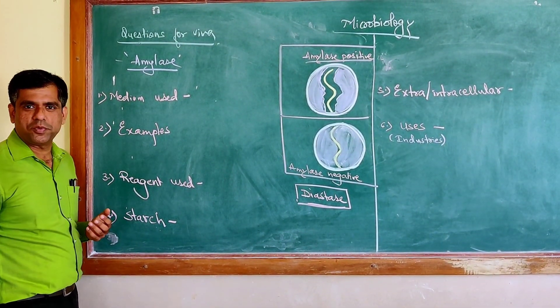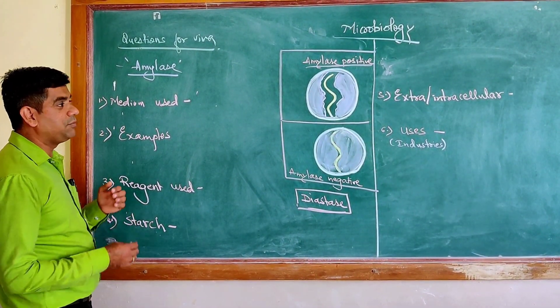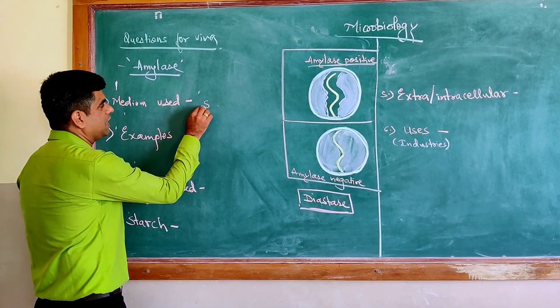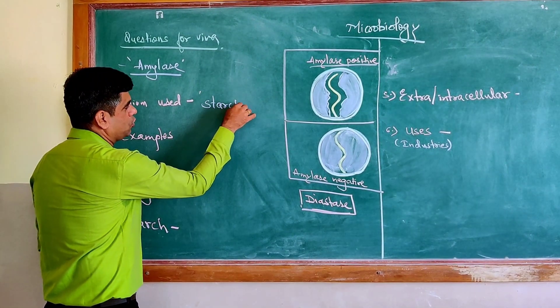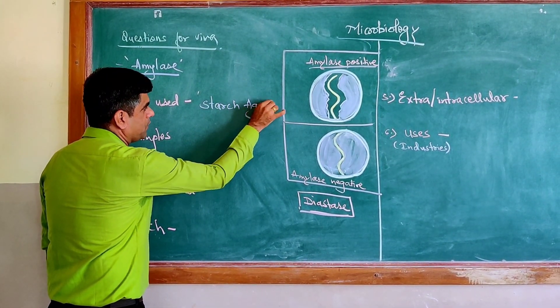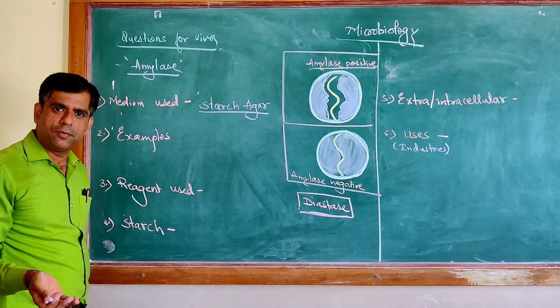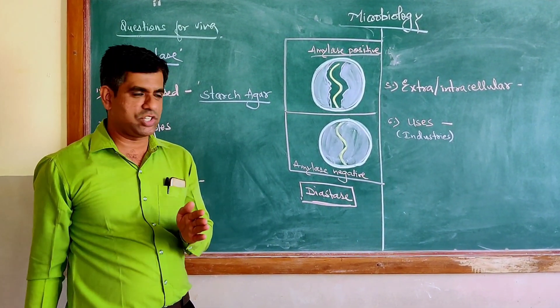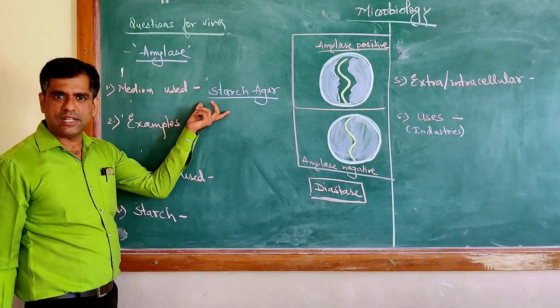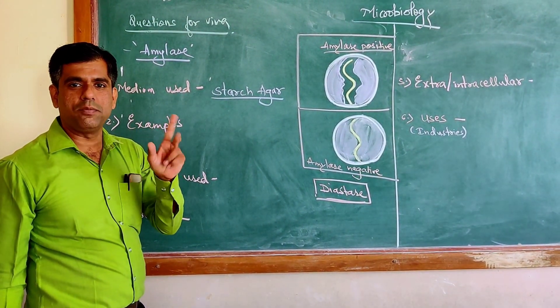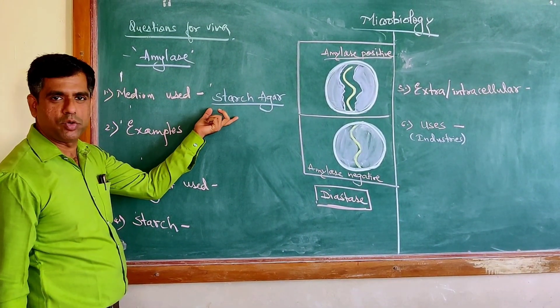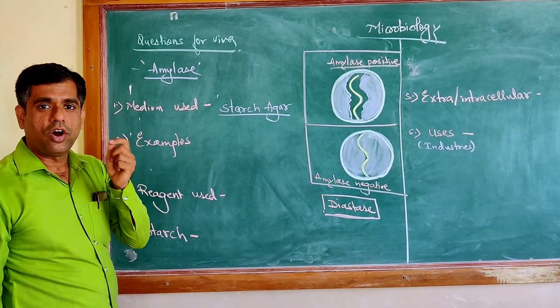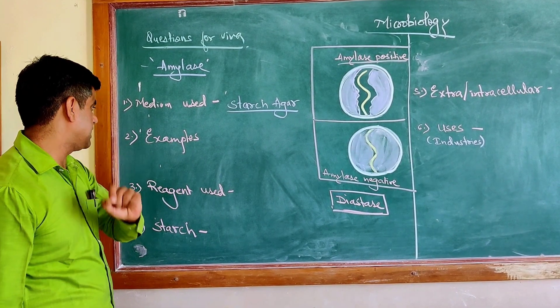The first question which may be asked is what is the medium used for this particular test. The most commonly used medium is referred to as starch agar. It is a common nutrient medium which is supplemented with around 1% of starch. So common nutrient agar supplemented with 1% of starch is the medium used for detecting the presence, absence, or production of this particular amylase by the test organism.